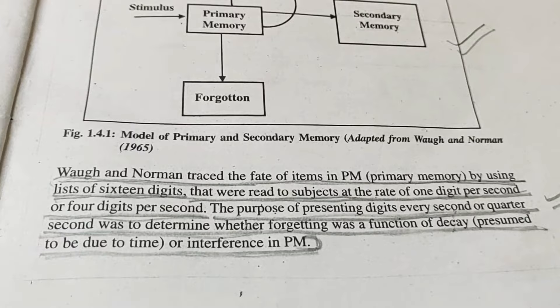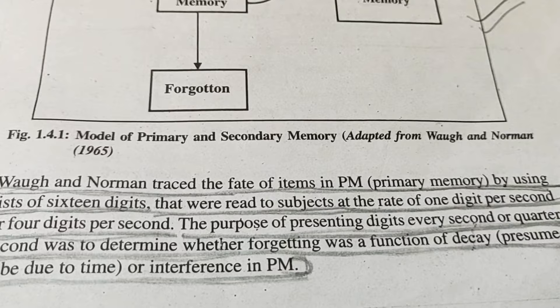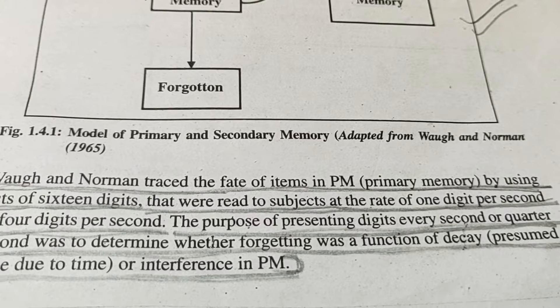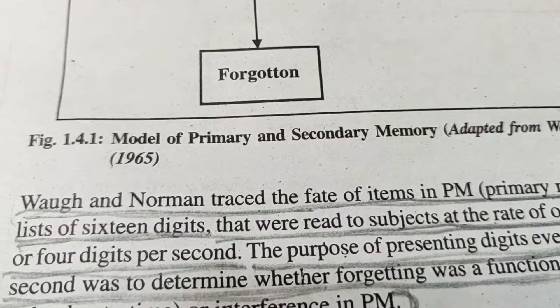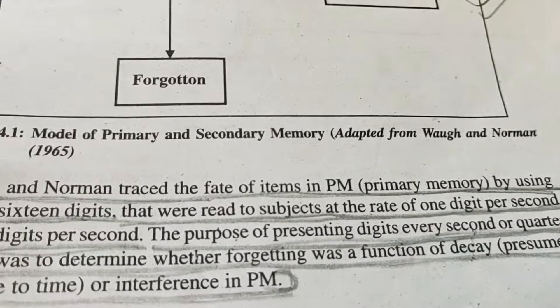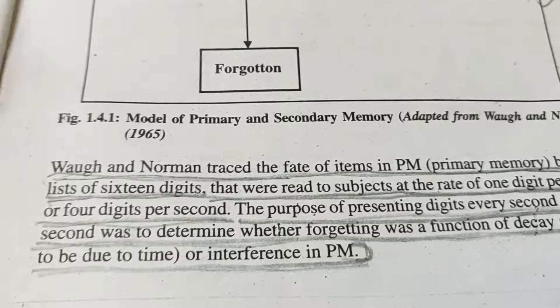They did an experiment using a list of 16 digits, where subjects were presented digits at different speeds — either one digit per second or four digits per second. At one digit per second, all 16 digits took 16 seconds to present. At four digits per second, the same 16 digits were presented in just 4 seconds. They then checked recall to determine whether forgetting in primary memory was due to decaying or interference.